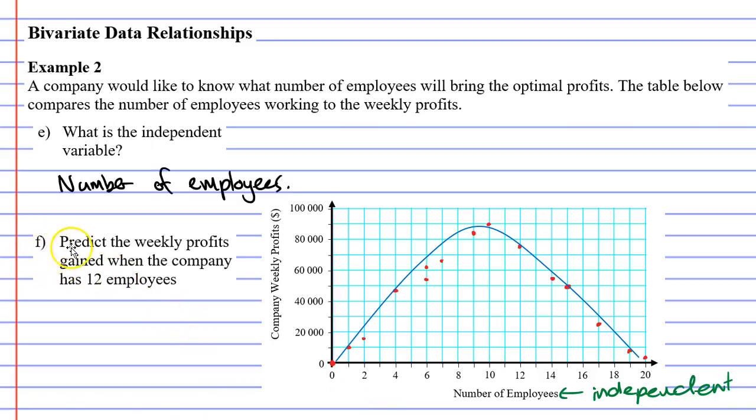Question F wants us to predict the weekly profits gained when the company has 12 employees. If we look where the 12 is, we need to go up to our parabolic curve, not the point, but to the parabolic curve, and then go across.